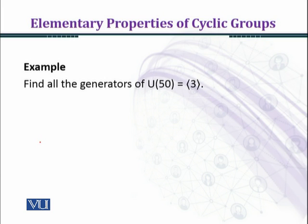Find all the generators of U(50), the group of units of 50, which is generated by 3.